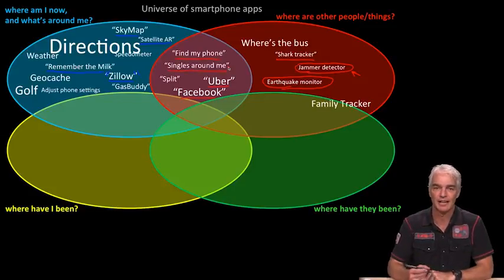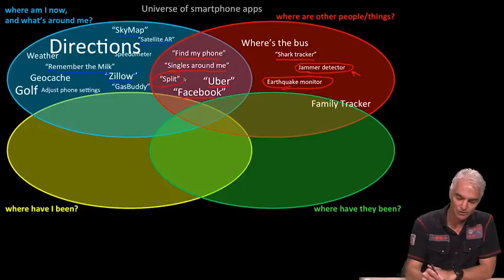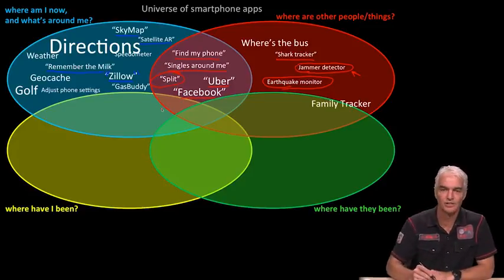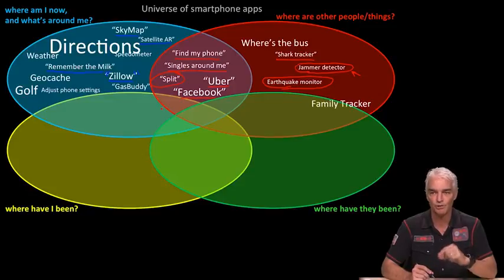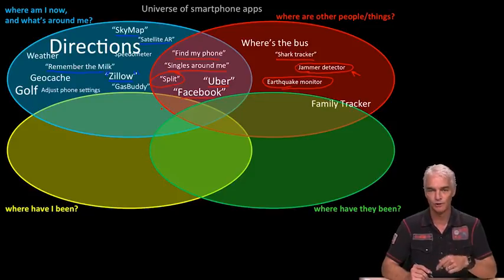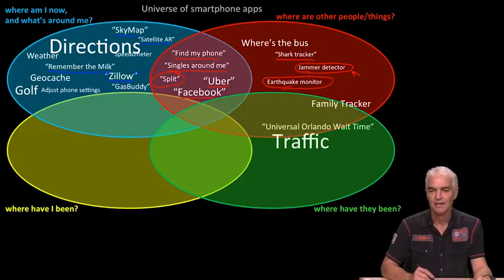There's an app called 'Singles Around Me' where if you log in, you can find other people who've also logged in and want to be found. Perhaps the funniest and most interesting social app is something called Splitr, which advertises itself as an anti-social app. It crawls other apps like Facebook, finds names of people who've posted their location, and if you register and tell it people you want to avoid, it will warn you if they're in your vicinity so you can keep out of their way.